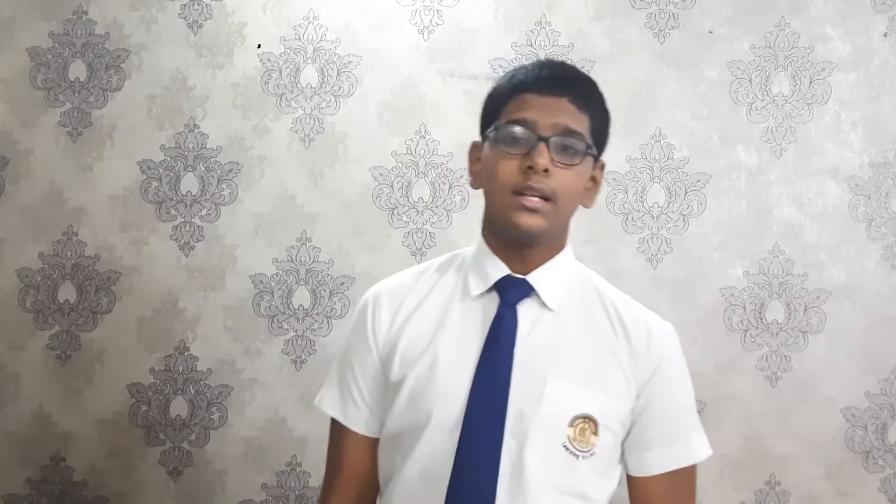An acute angle is a type of angle which measures less than 90 degrees. For example, this laptop which is measuring less than 90 degrees in angle.